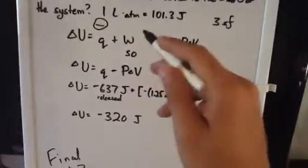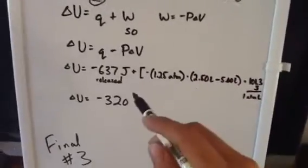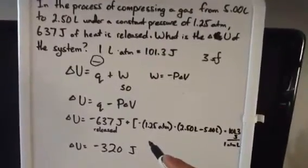Everything that should be W is within this one bracket. I forgot to put another bracket here. So we were given 1.25 atmospheres.